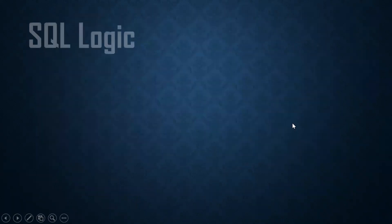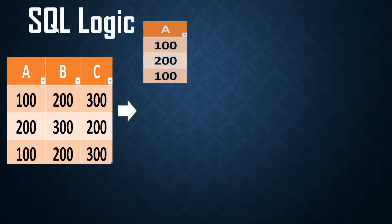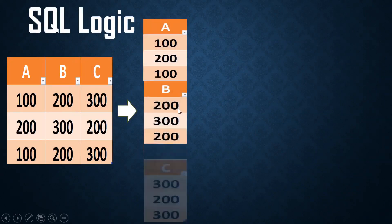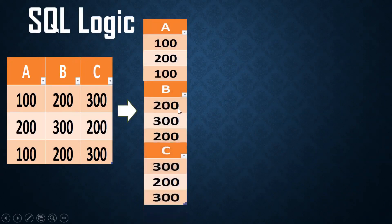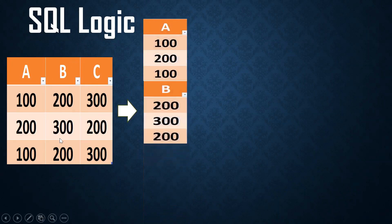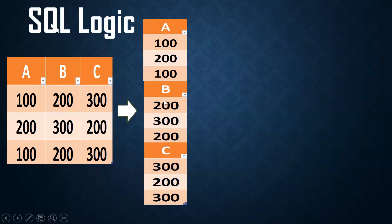Now I'll explain the logic. This is my input table with three columns A, B, C. I'm taking column A, clubbing with column B, and clubbing with column C — so 100, 200, 300, 200 — I'm clubbing all of them together.